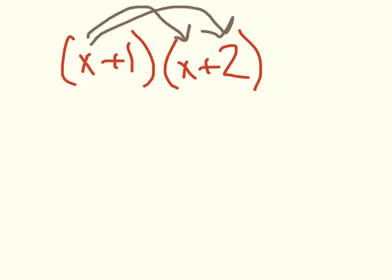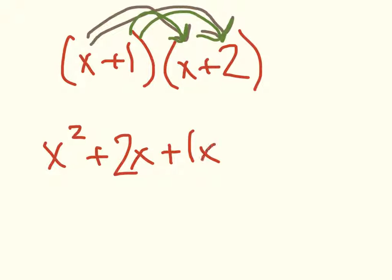I'm going to go ahead and do that. x times x is x squared, and x times 2 is 2x. Now I have to make sure that I do it for the 1, 2. This is the double part. So I'm going to multiply the 1 times the x and also the 1 times the 2. So 1 times x is 1x, and 1 times 2 is 2.